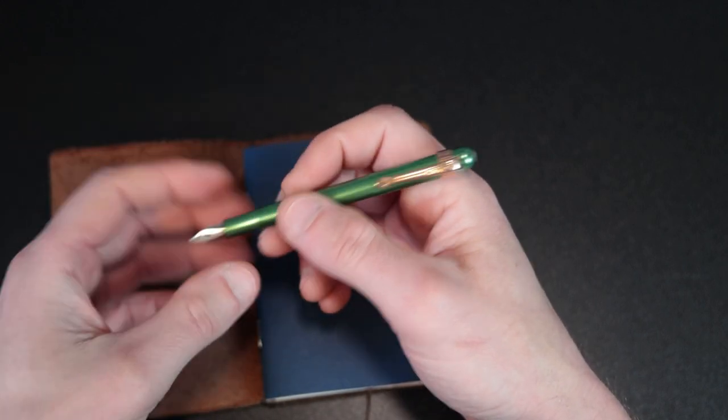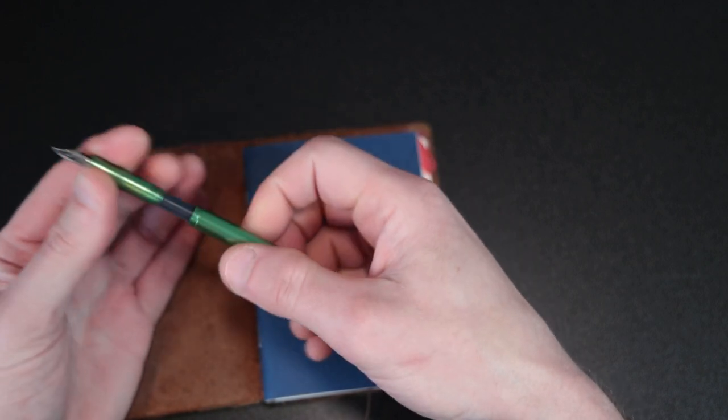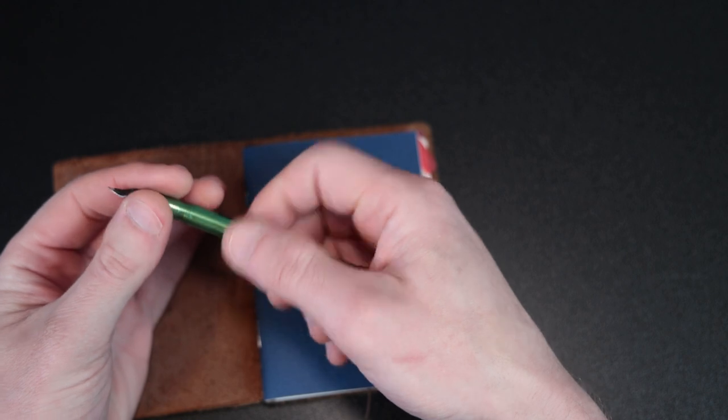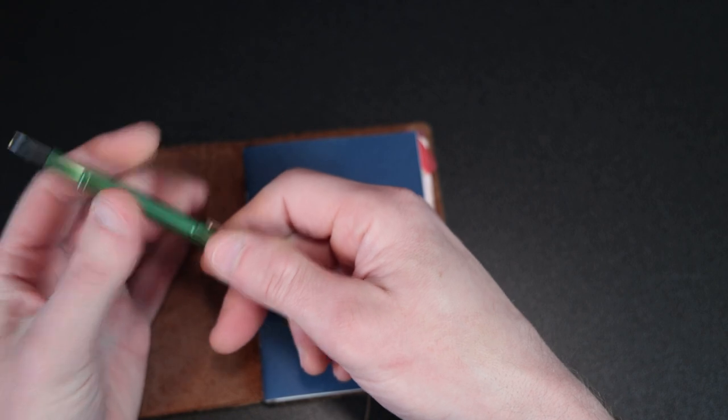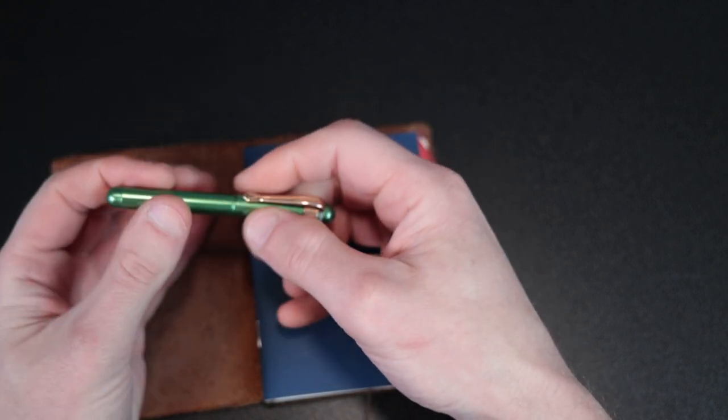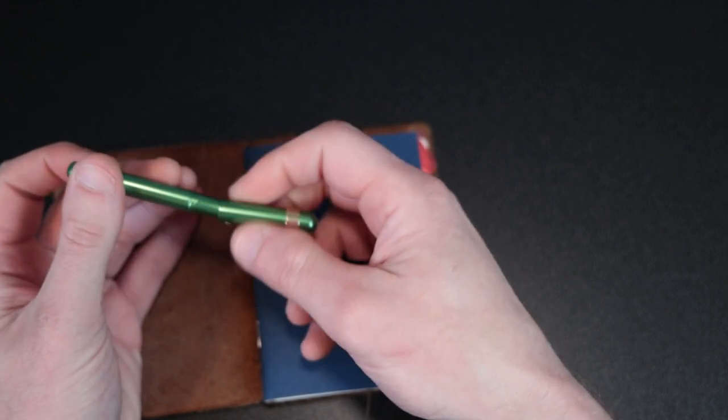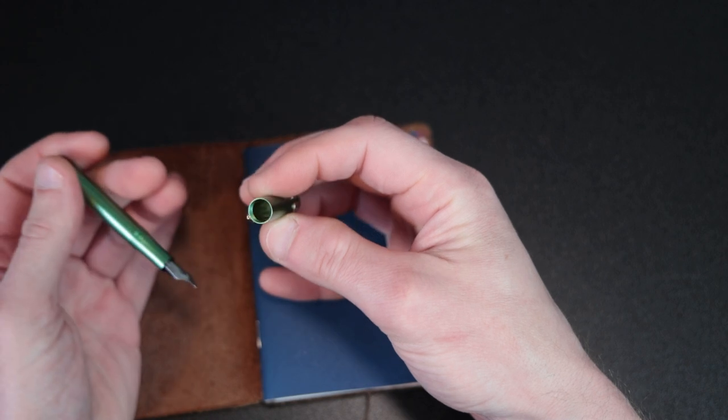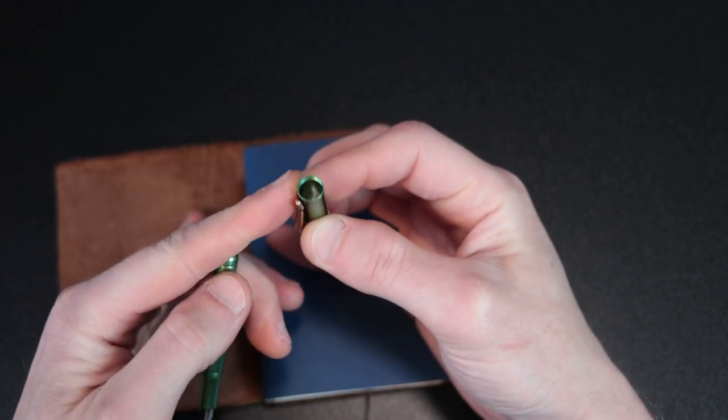I'm assuming it's going to be fairly robust. I'm also assuming though, that it is painted. So I don't know if after a while screwing and unscrewing the section to put new ink cartridges in, posting the cap, capping the pen, if eventually that's going to rub off some of the paint around the threads. I don't know. No, it isn't actually. So here you can see inside the threads are just that aluminum.